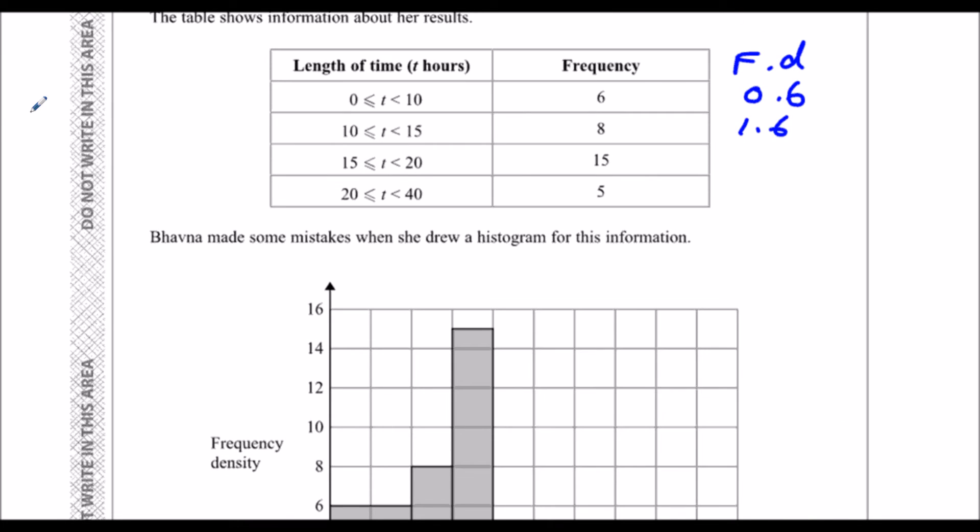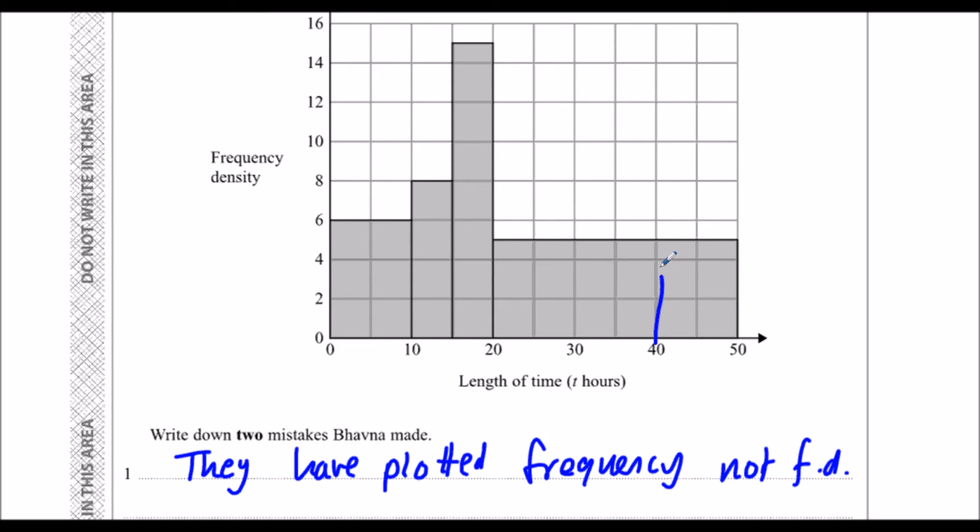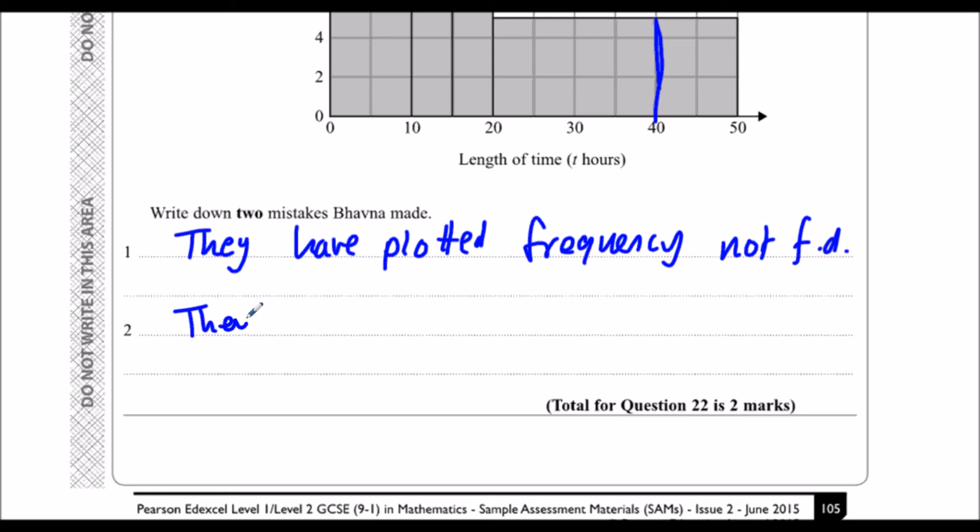And secondly, the last box was 20 to 40, they've gone all the way to 50. So they have drawn the 20 to 40 box up to 50.